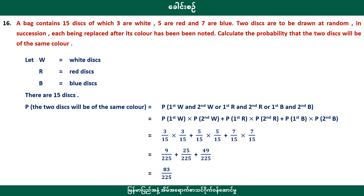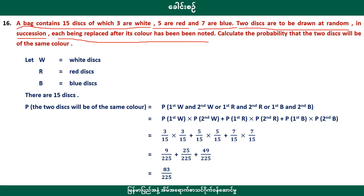Exercise 16. A bag contains 15 discs, of which 3 are white. It also contains 5 of one colour, 7 of another, and 2 of another. One disc is replaced after each colour has been drawn. Then, as we will see, one colour is black.